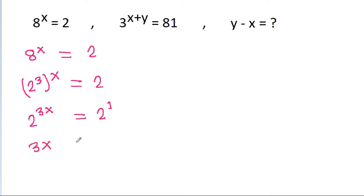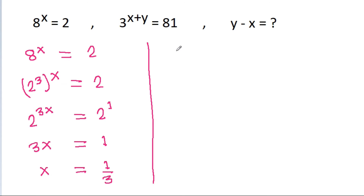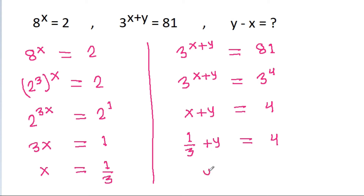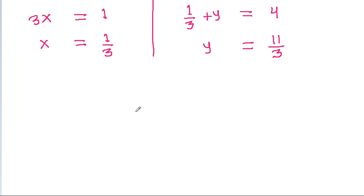So 3x will be equal to 1, and x will be equal to 1 by 3. And we have 3 power x plus y is equal to 81, and 81 is 3 power 4. So x plus y will be equal to 4, and substituting x as 1 by 3, y will be equal to 4 minus 1 by 3, which is 11 by 3.